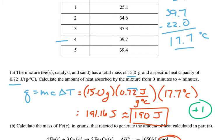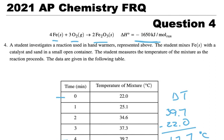Part B says calculate the mass of iron in grams that reacted to generate the amount of heat calculated in part A. I need to use the thermochemical equation: 4 moles of iron react to give off 1650 kJ per mole of reaction. Per mole of reaction means the reaction as written.